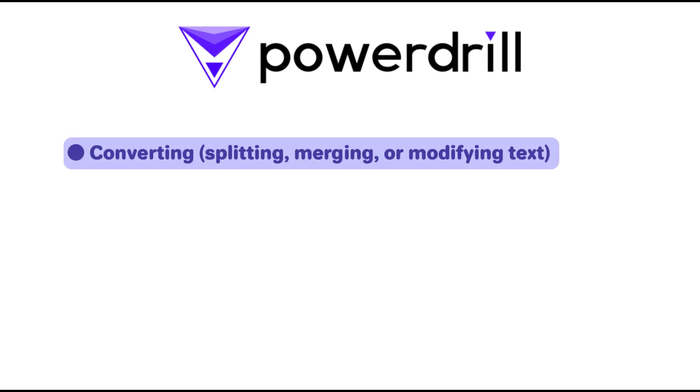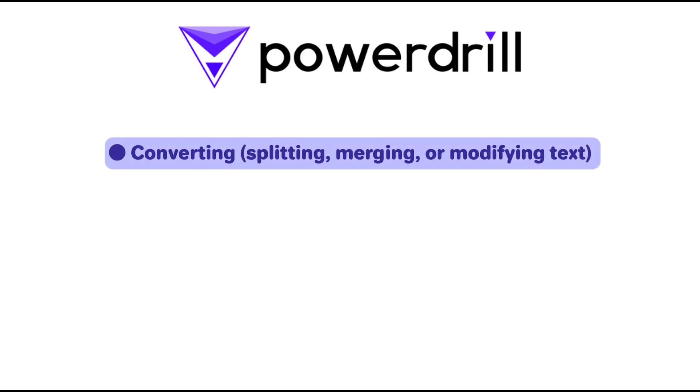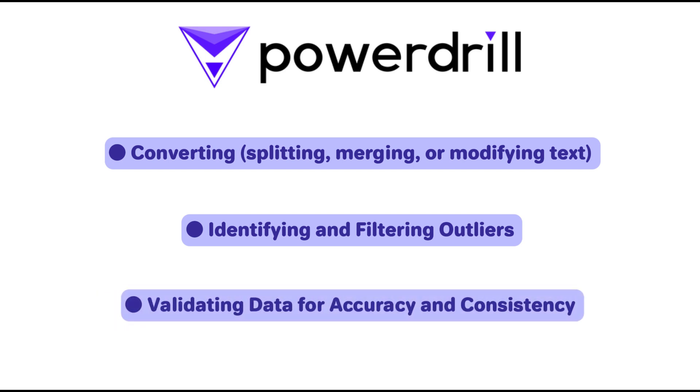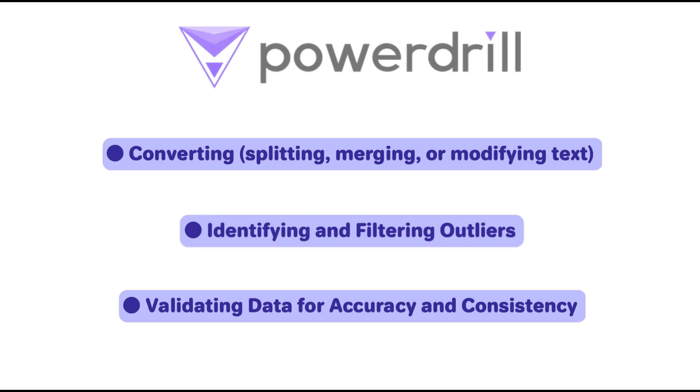PowerDrill AI handles a wide range of tasks, including converting, splitting, merging, or modifying text; identifying and filtering outliers; and validating data for accuracy and consistency.